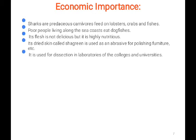Economic importance: they are predacious carnivores feeding on lobsters, crabs, and fish. Poor people living along the sea coast eat dogfish. Its flesh is not very delicious but is highly nutritious. When you cut open the specimen, the quantity of flesh is relatively less compared to the waste, which is why it is not preferred as a fish food item. However, nutritionally it is highly valuable. Its skin is called shagreen and is used as an abrasive for polishing furniture.